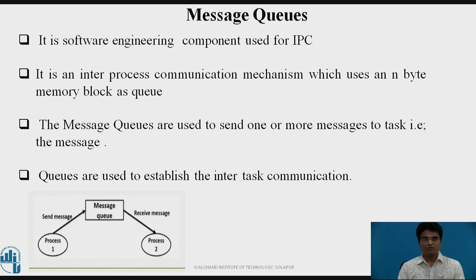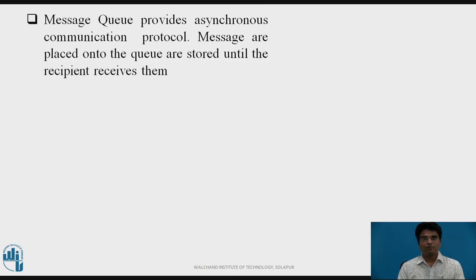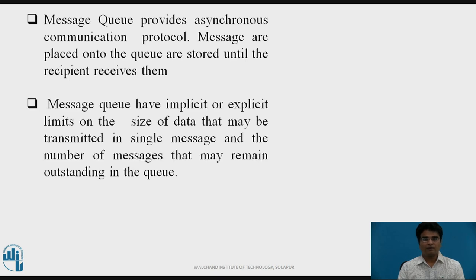As shown in the figure, Process 1 and Process 2 are used. Process 1 sends messages to the message queue sequentially, while Process 2 receives messages sequentially from the message queue. Message queue provides a synchronous communication protocol. Messages placed onto the queue are stored until the recipient receives them. Message queues have implicit or explicit limits on the size of data transmitted in a single message and the number of messages that may remain outstanding in the queue.